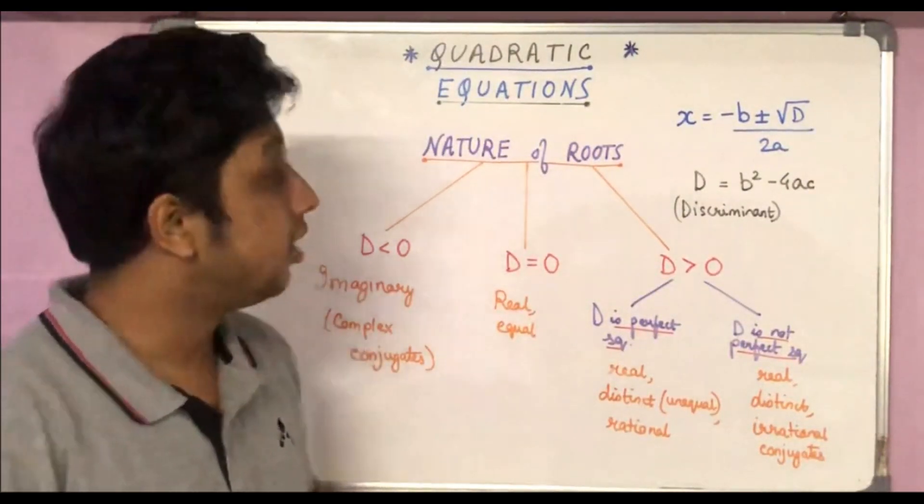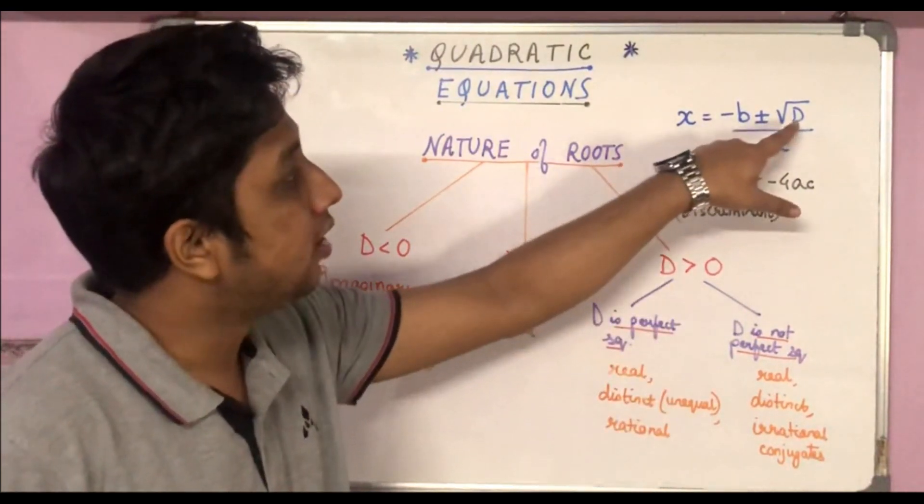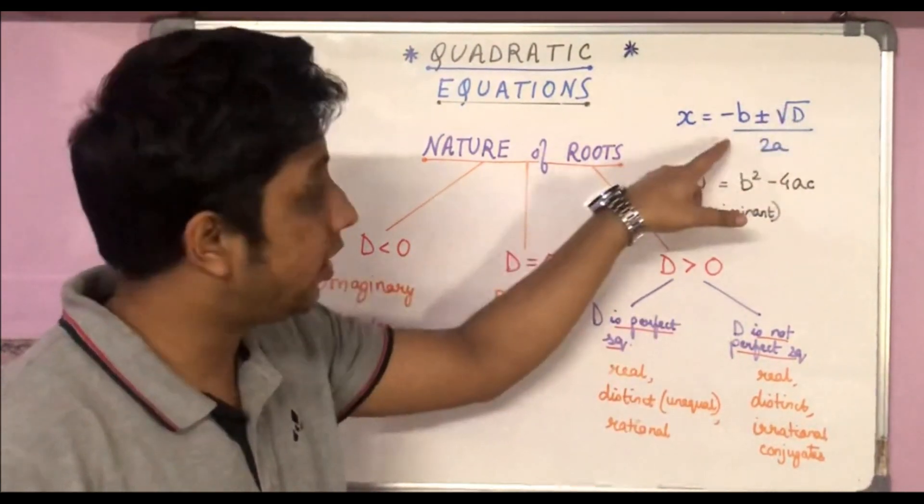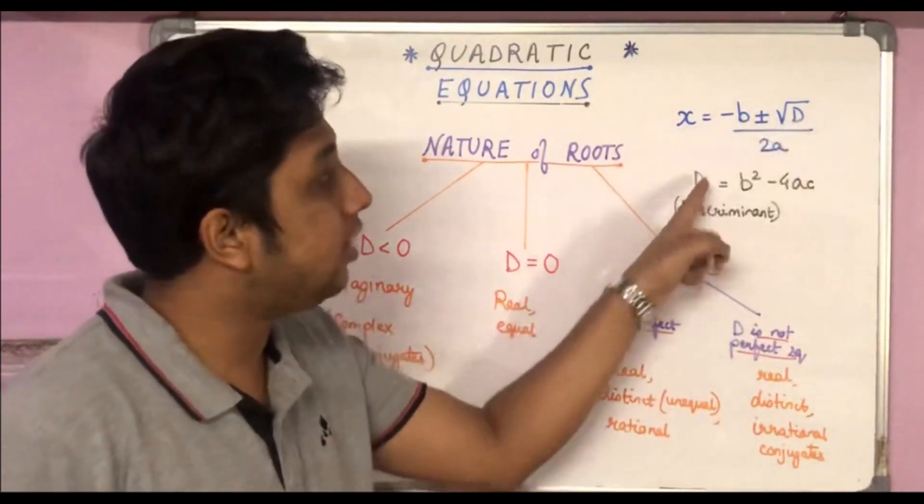Now we know that x equals minus b plus minus root over b square minus 4ac by 2a according to the quadratic formula, and b square minus 4ac is called D. So we have capital D which is the discriminant.